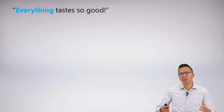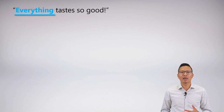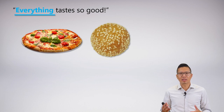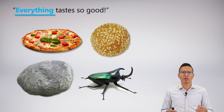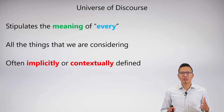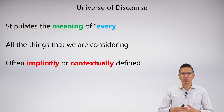So how do I symbolize something that says 'everything tastes so good'? Well, we really need to know the meaning of 'everything.' When I say 'everything tastes so good,' I'm talking about everything — clearly something like this and that. But when I say 'every,' it's really unclear whether I mean every single thing. What I'm highlighting is a problem in something called the universe of discourse. The universe of discourse really stipulates the meaning of what we mean when we say a word like 'every' — it says what are all the things we're considering in our 'every' claim.